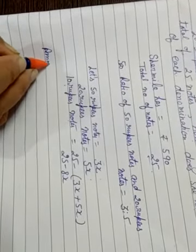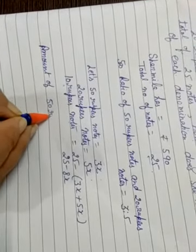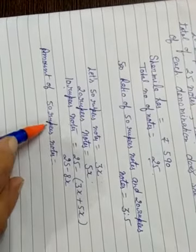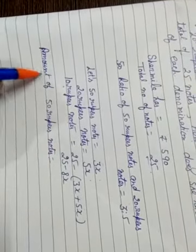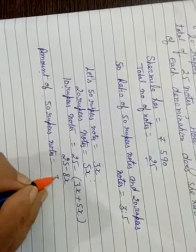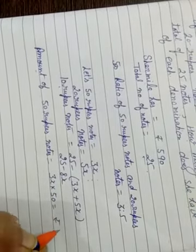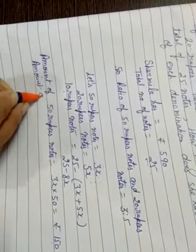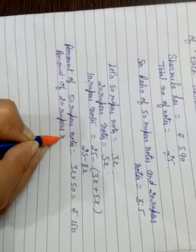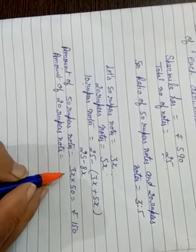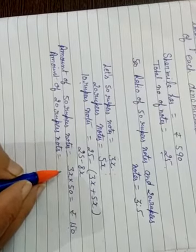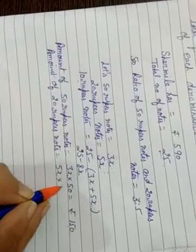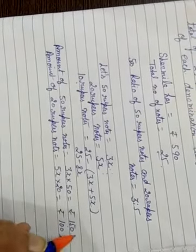Now, find amount. Amount of 50 rupees notes is equal to... Children, how do we calculate amount? If you have 5 notes of 50, then you have 50 multiply by 5 is equal to 250 rupees. Similarly, amount of 50 rupees note is 3x multiply by 50. It means rupees 150x is value of 3x notes of 50 rupees. Amount of 20 rupees notes is equal to... If you have 7 twenty rupees notes, then you have 20 multiply by 7, it means 140.